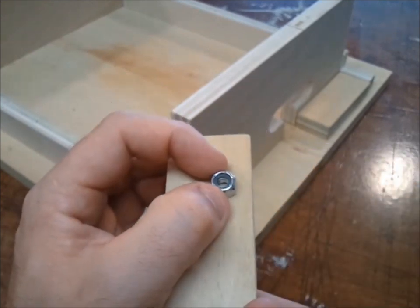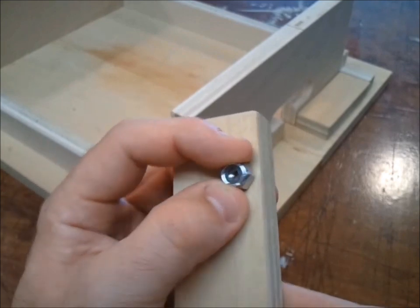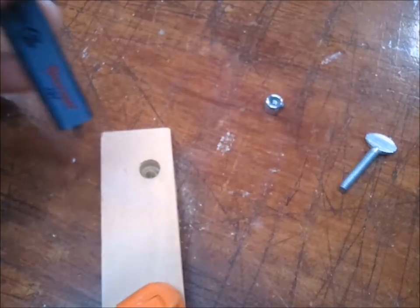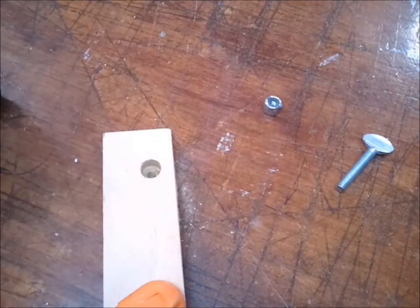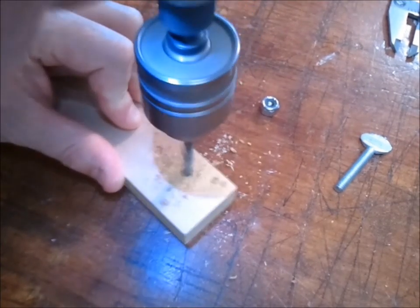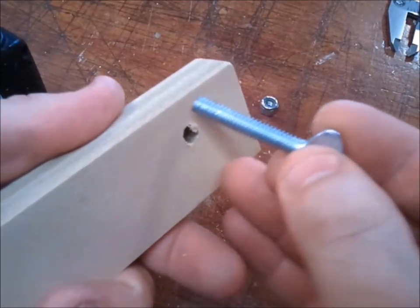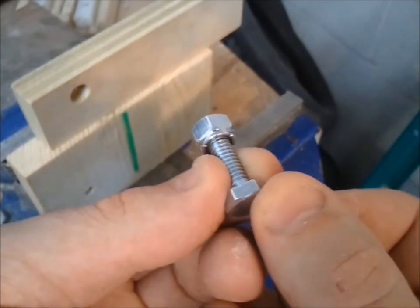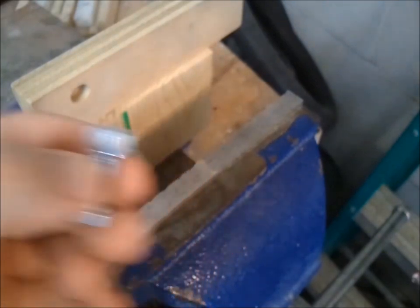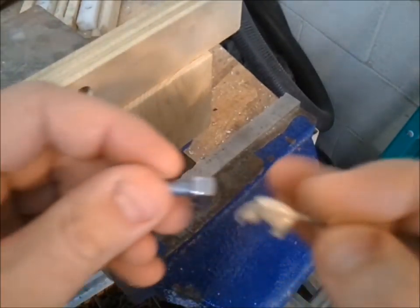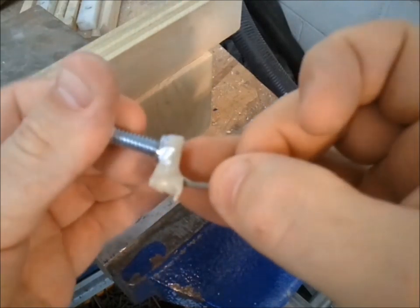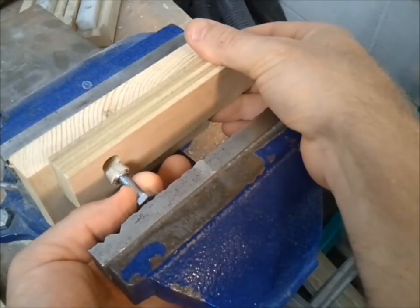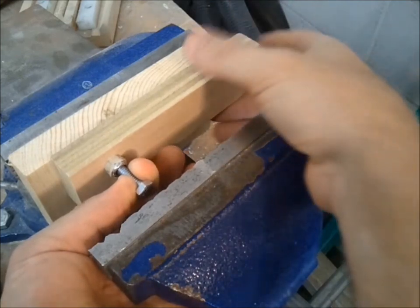But the lock nut will prevent any vibrations from the belt sander from changing the setting. I'm going to bolt backwards through the nylon into the lock nut, then apply a little bit of liquid nails, then press it in with the vise until it's flush.